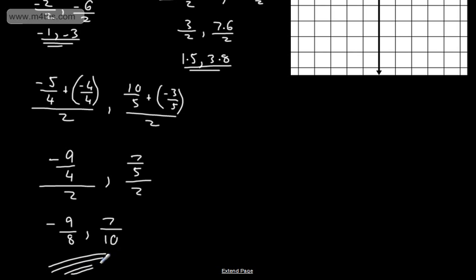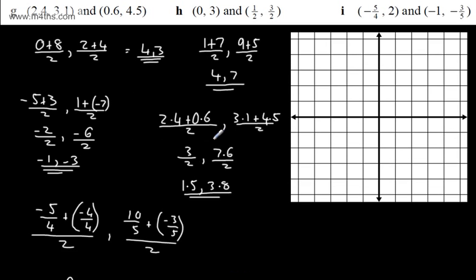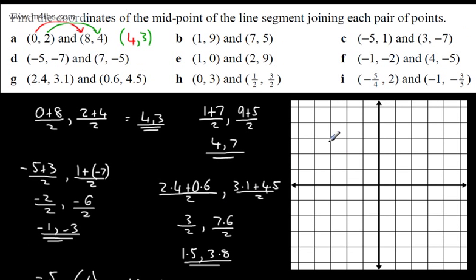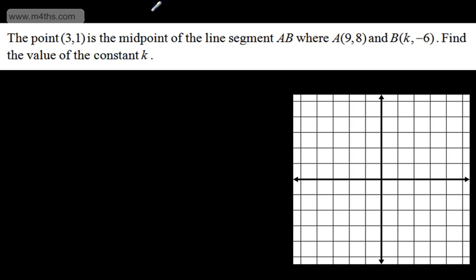As you can see with that one, I wouldn't want to try and graph it. Let's finish with a question that might be on an exam. Point 3, 1 is the midpoint of line segment AB, where A is (9, 8) and B is (K, negative 6). We need to find the value of the constant K.